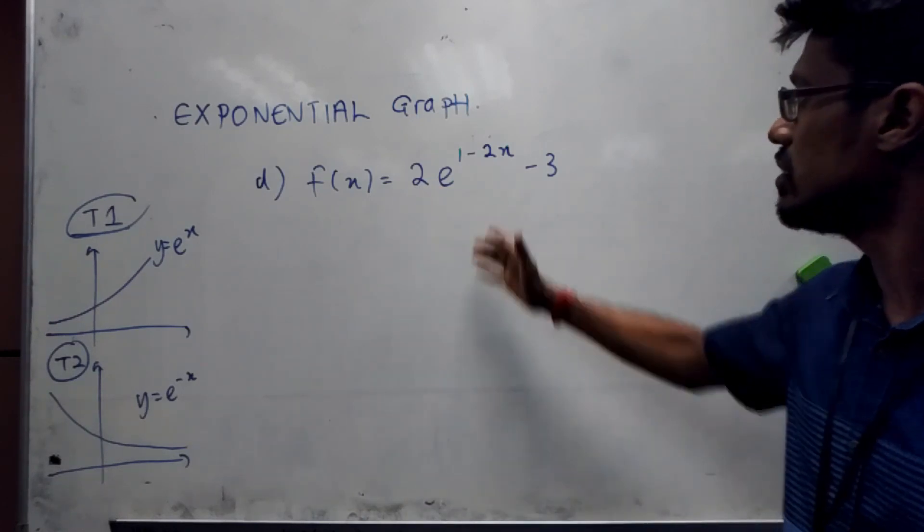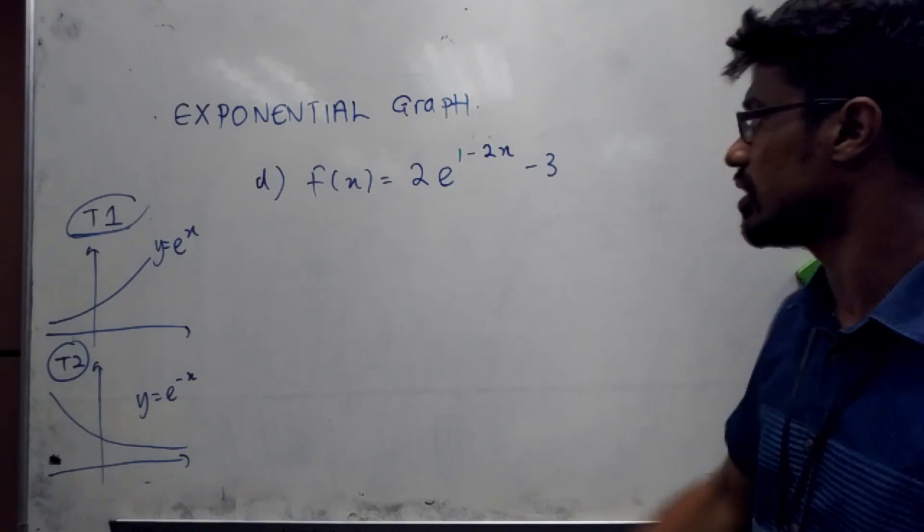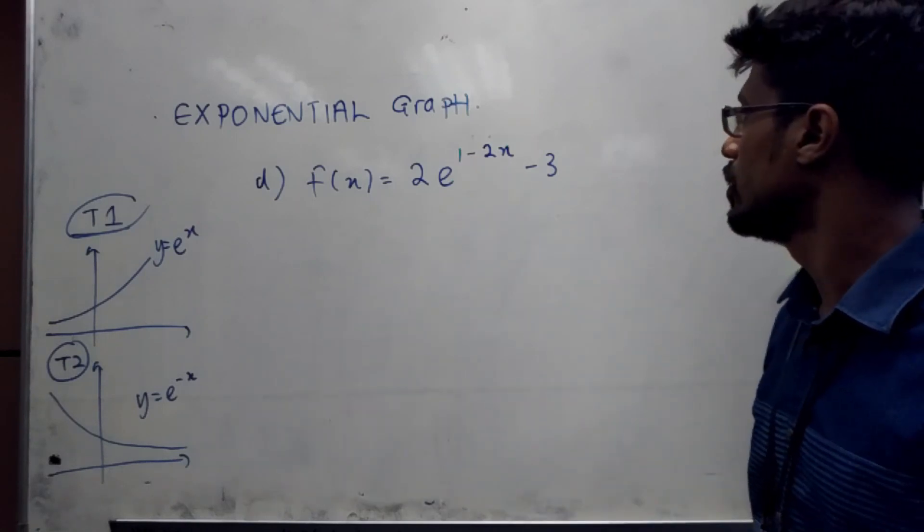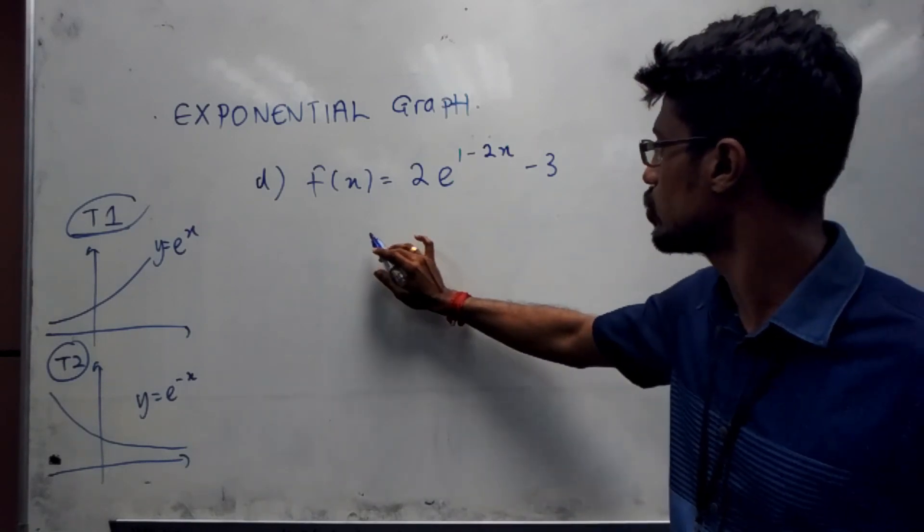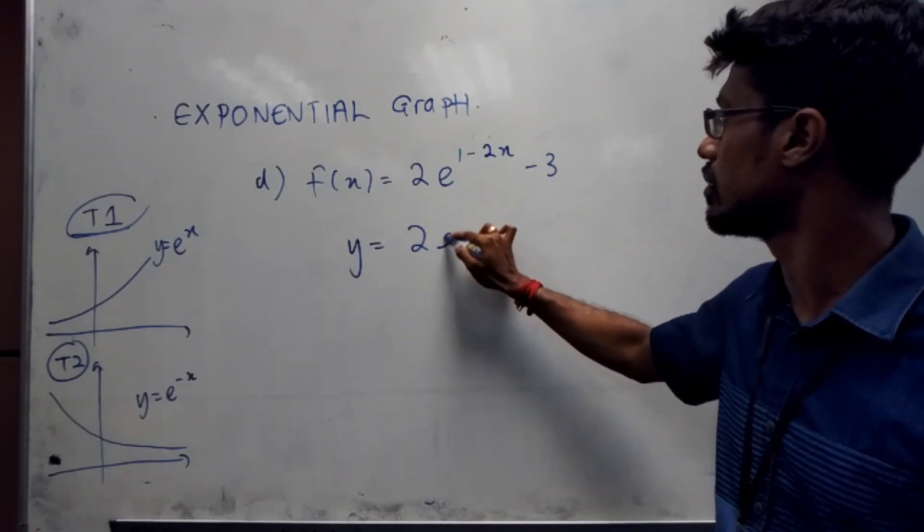As you can see, by now shouldn't be any problem. You should be able to see that this is definitely going to be type 2. Why type 2? Because the x is negative. So that is the first one. So I'm going to just go and consider drawing the graph of this.